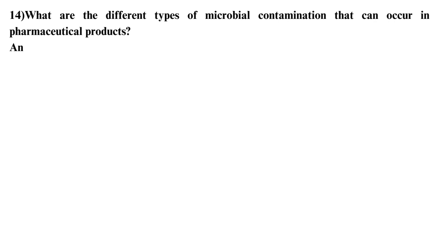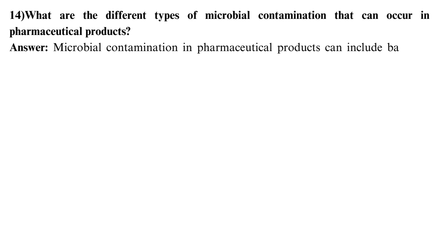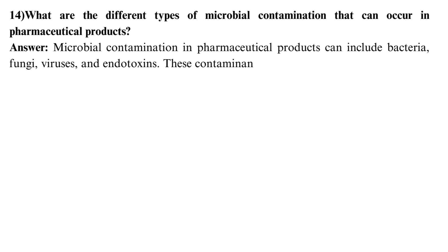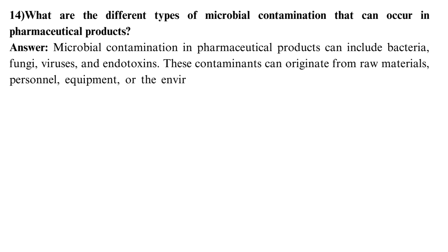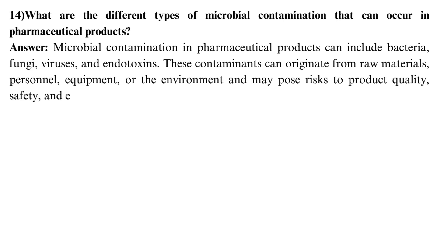What are the different types of microbial contamination that can occur in pharmaceutical products? Microbial contamination in pharmaceutical products can include bacteria, fungi, viruses, and endotoxins. These contaminants can originate from raw materials, personnel, equipment, or the environment, and may pose risks to product quality, safety, and efficacy.